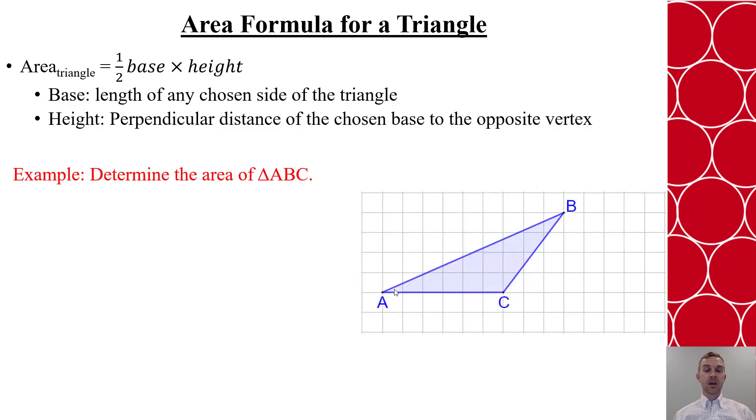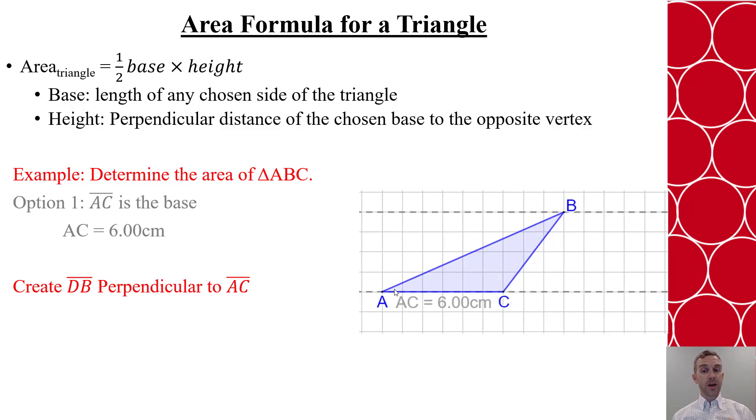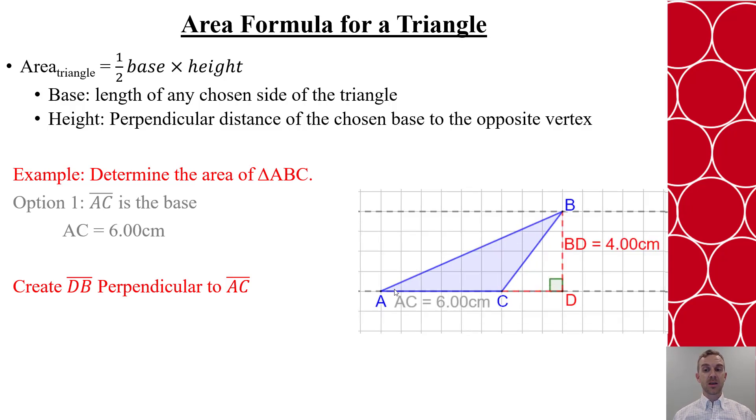Let's look at that. Say we have this triangle here, ABC, and we want to determine the area. Most people would say let's use AC as the base because that's an easy measurable side. In this case, it's 6 units. Now we want to go and create the perpendicular distance to the opposite vertex. Think about it as if you have parallel lines coming through AC and then through point B. Now we're going to make a perpendicular segment up to point B, and I can easily see on this graph that that's 4 units and 4 centimeters.